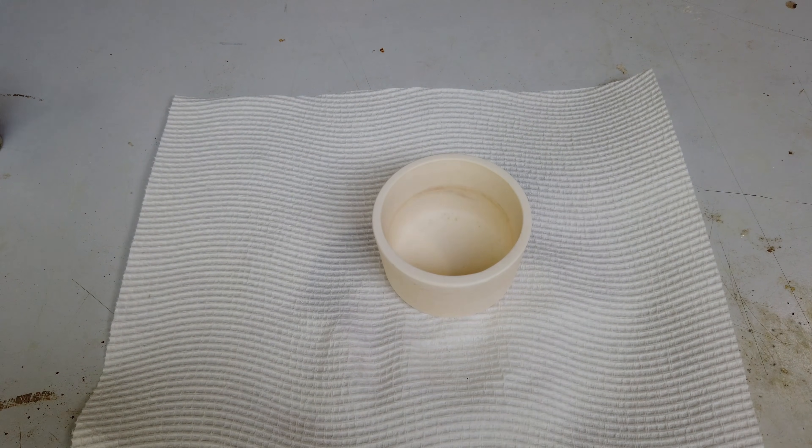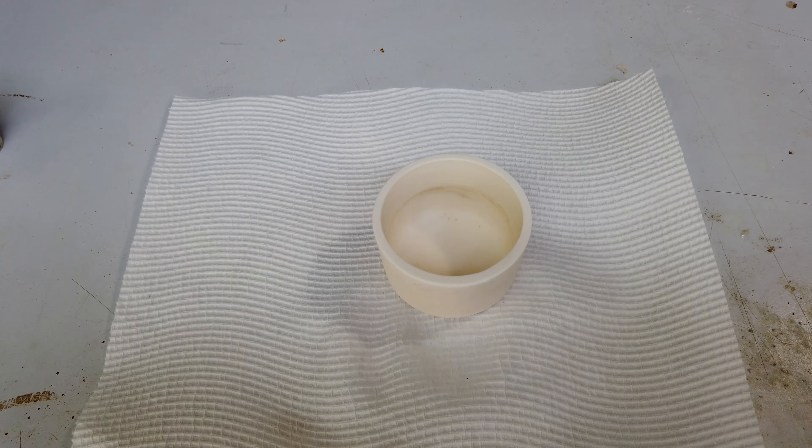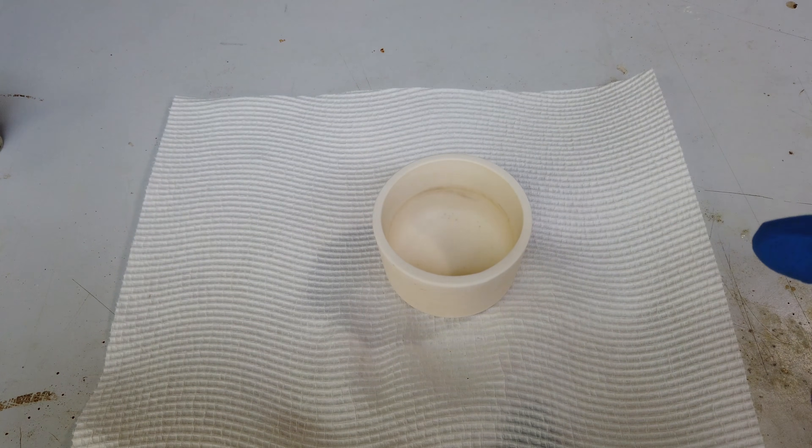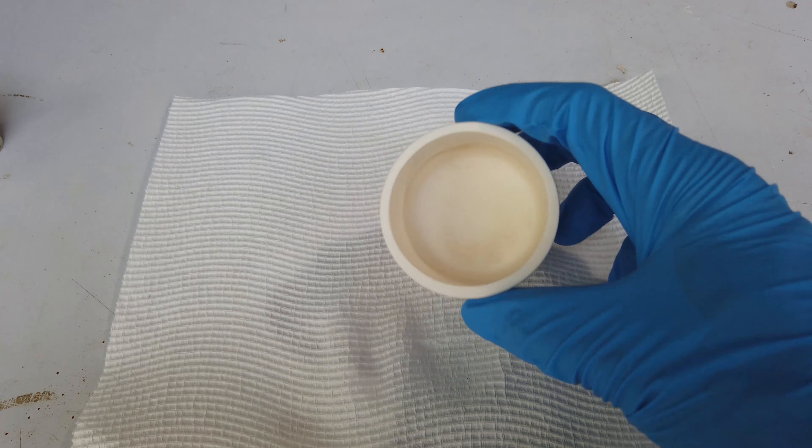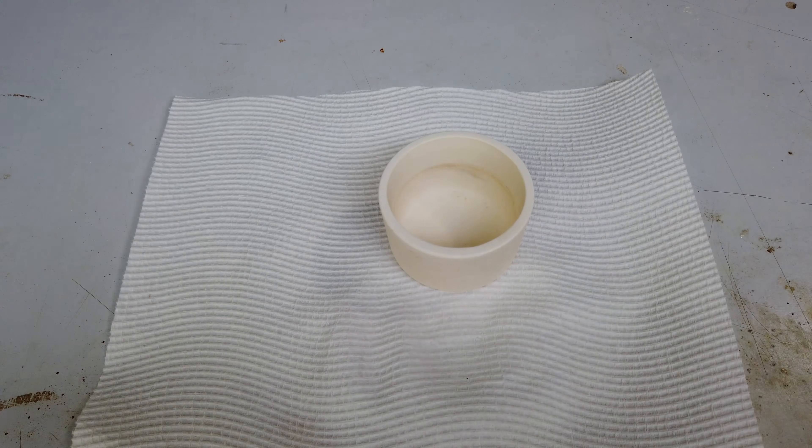I've got two ideas for how we can get around this problem of not being able to make potassium by molten salt electrolysis, but we'll cover those in future videos. My second idea for it will involve this thing. Regardless, I think today was a success.